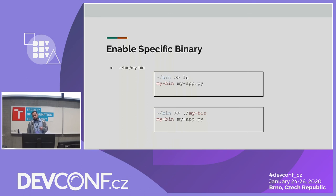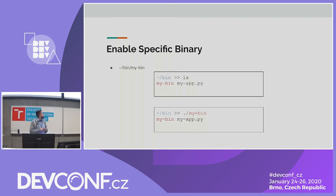Let's say we would like to enable some custom software in a home directory. I'm a regular user and I'd like to run my script or something. I have two files in my home directory: one is a binary — a copy of the LS command — and the second is a Python script. If I run the binary, it lists the contents of that directory.